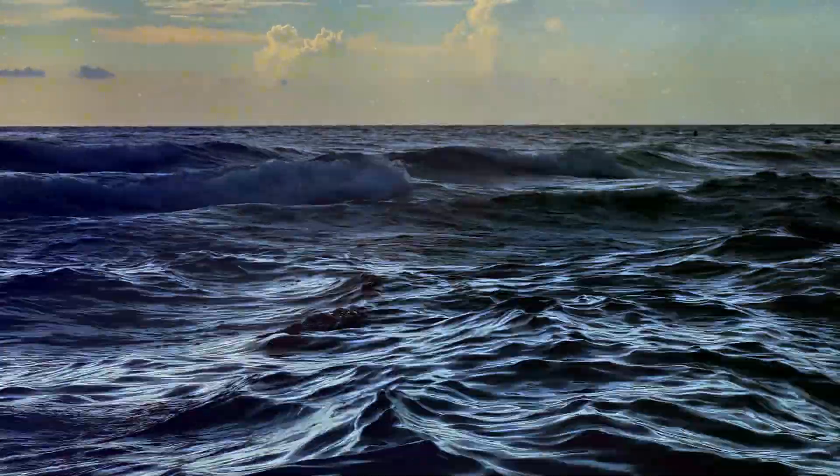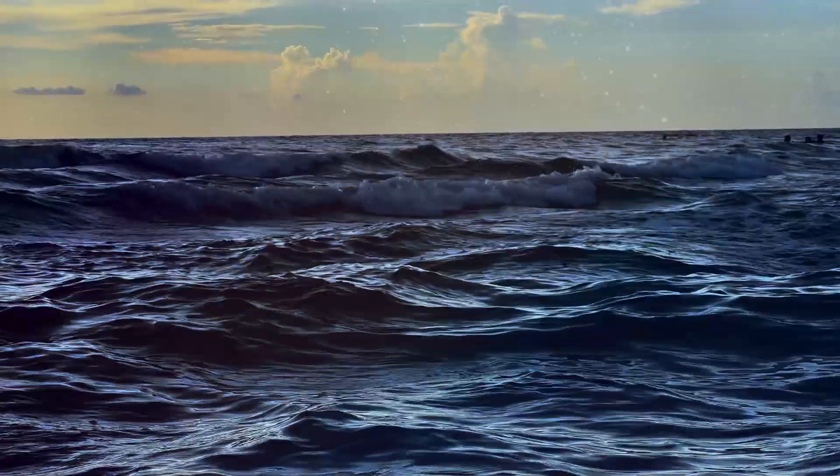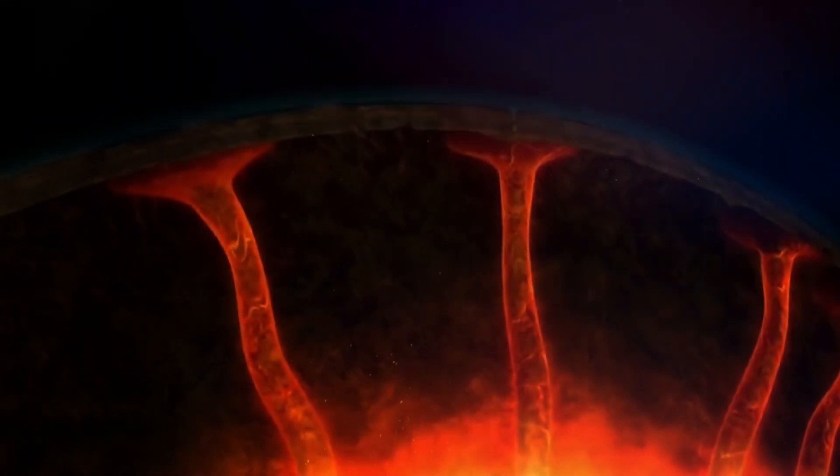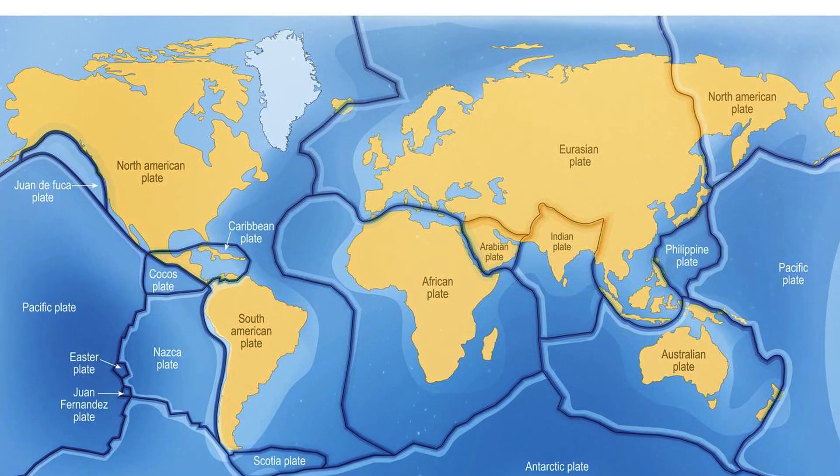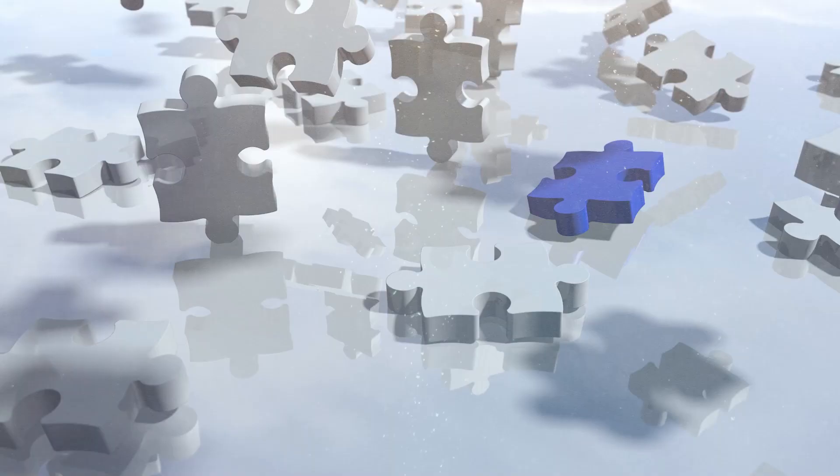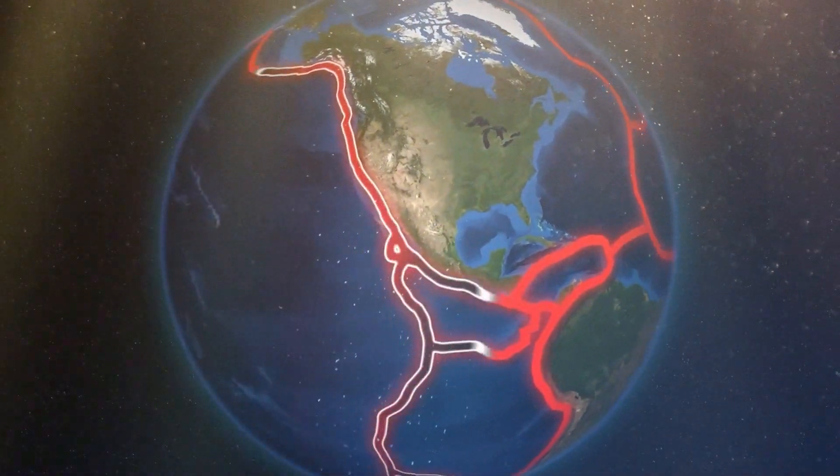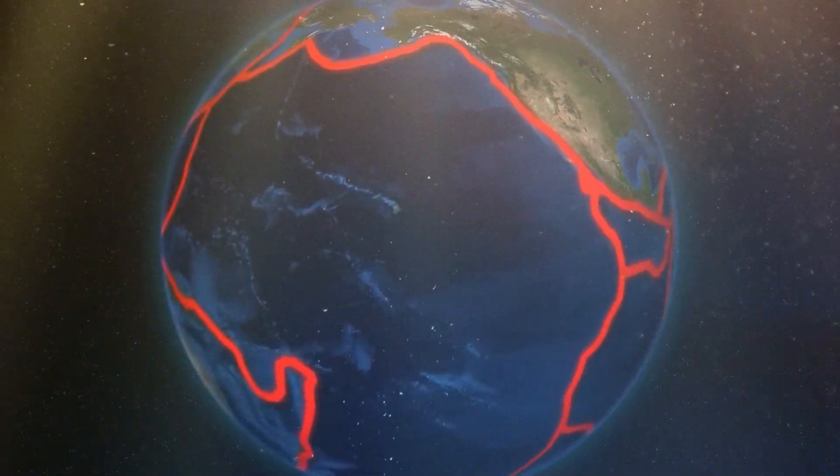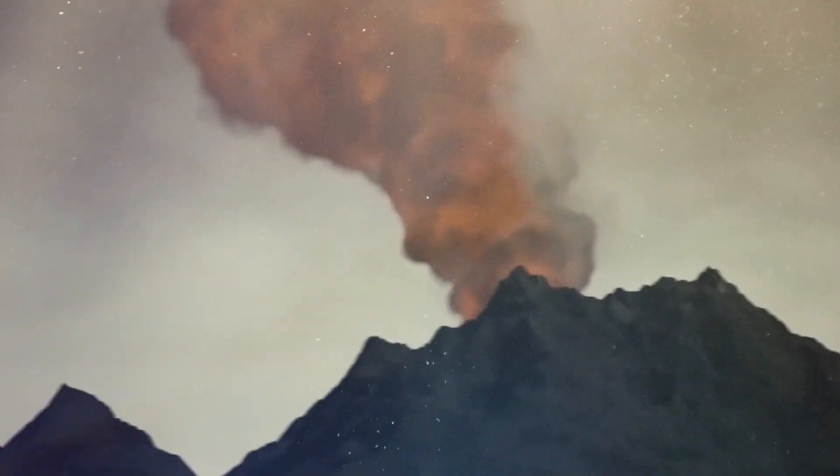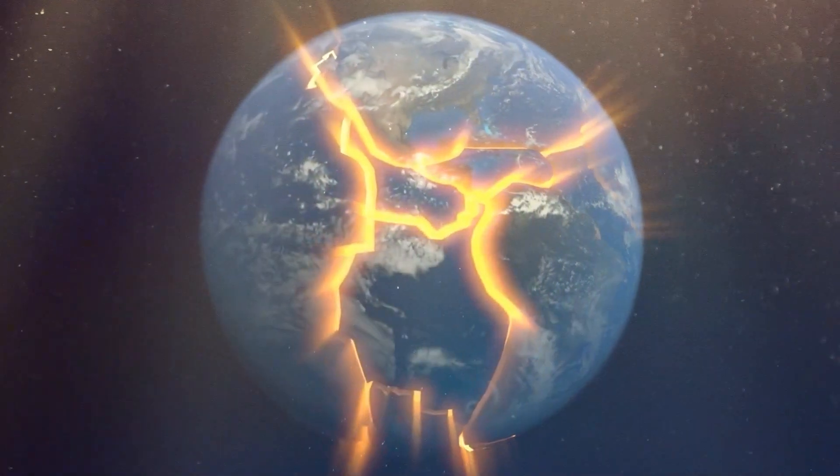But wait, there's more. The crust isn't just one solid piece - it's broken up into chunks called tectonic plates. They're like puzzle pieces that are constantly moving, shifting, and sometimes colliding. This movement is what brings us earthquakes, volcanic eruptions, and the ever-changing landscape.